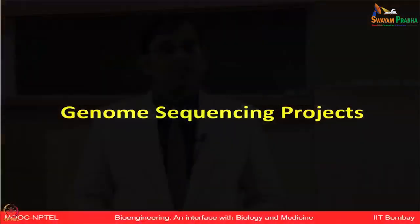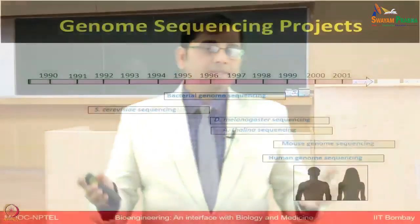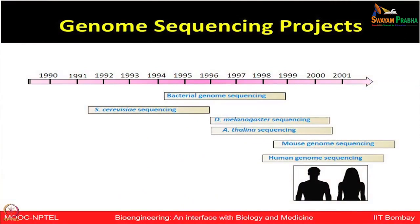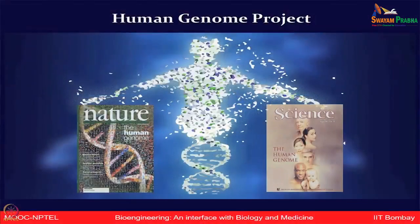Let us first start with the genome sequencing projects. The human quest to understand and analyze all the genes present in humans and various other organisms materialized during the time frame of 1990s to 2002. Many genome sequencing projects, especially looking at bacterial genome sequencing, yeast or Saccharomyces cerevisiae, Drosophila melanogaster or fruit fly, Arabidopsis thaliana, mouse, as well as the human genome sequencing project, were in progress during that time frame. In 2001, the first draft of the human genome was reported in the journals Nature and Science.